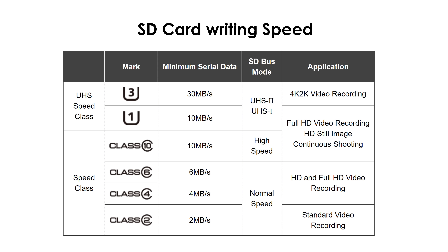Here is a table that shows what writing speed a card has with the different symbols. To use my earlier example, the 90,000 kilobit per second are equal to 11.25 megabyte per second, so I would need a U3 card to be able to store the footage on the SD card.